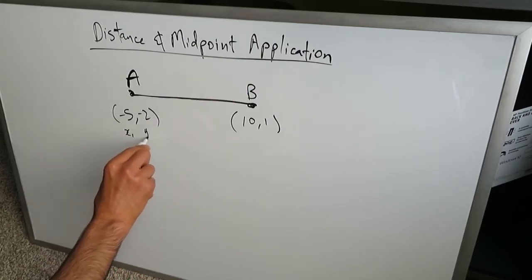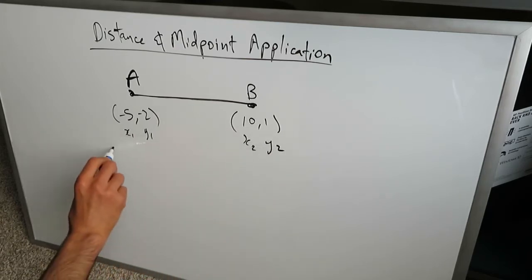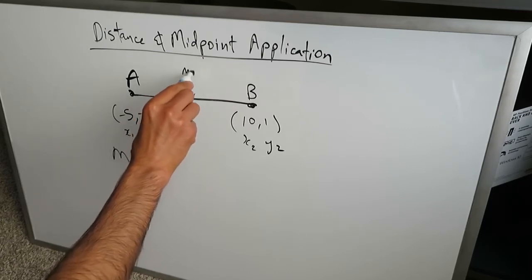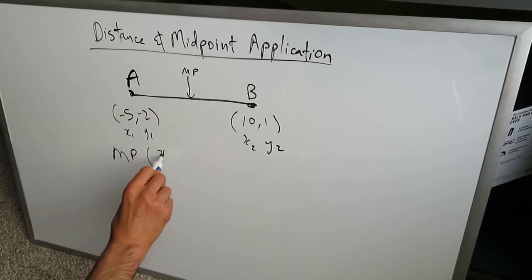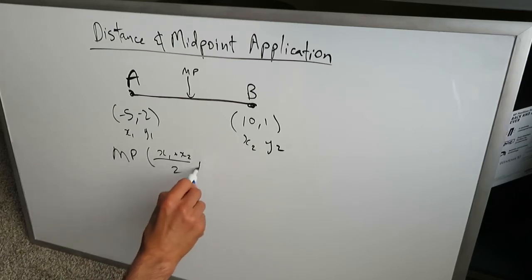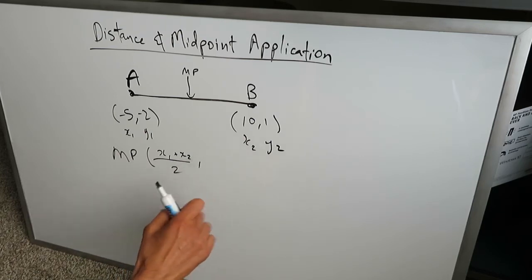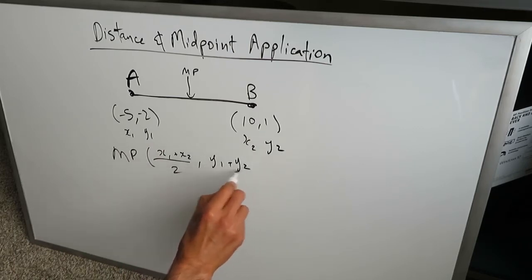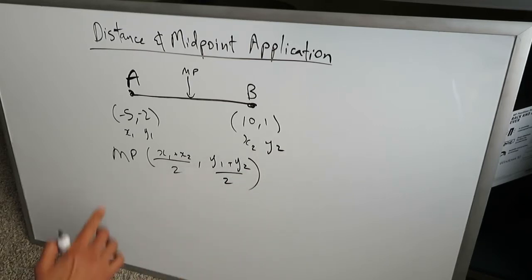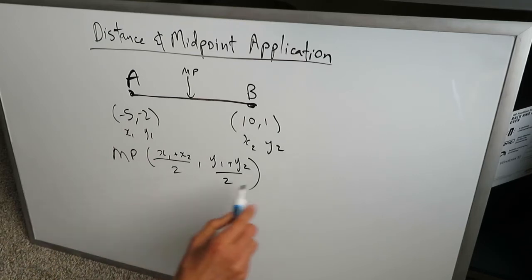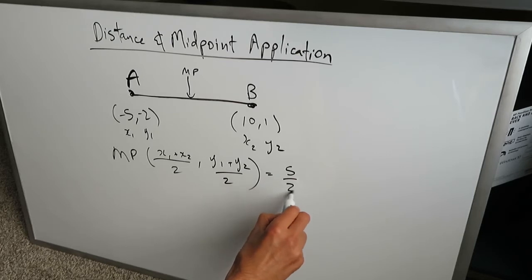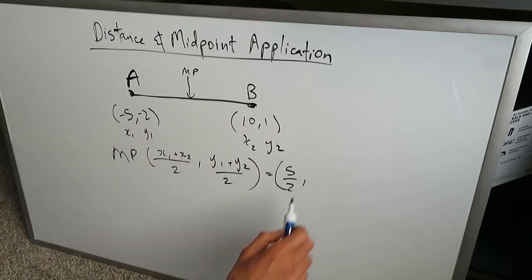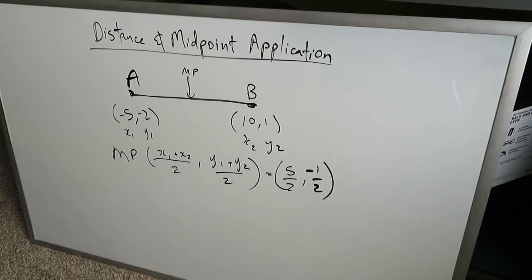If this is x1 and y1, we'll call this x2 and y2. Midpoint, abbreviated as MP, is actually the middle point of this segment — exactly right in the center. The formula is x1 plus x2 divided by 2, comma, y1 plus y2 divided by 2, because the midpoint is in the format of a coordinate set with an x and a y value. So x1 plus x2 would be minus 5 plus 10, which is 5, and 5 divided by 2 is 5 over 2. The y coordinate would be minus 2 plus 1 is minus 1, and minus 1 divided by 2 is minus 1 over 2. So this right here is the midpoint.